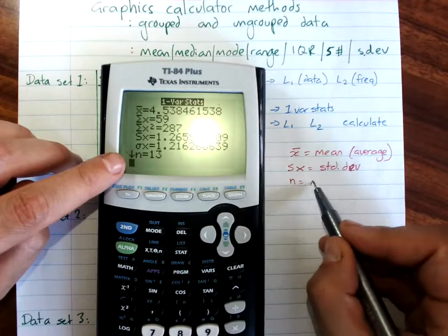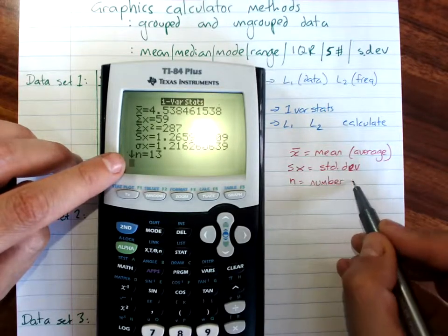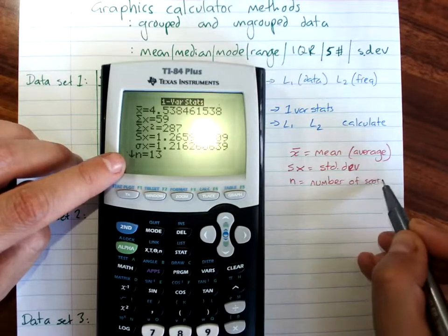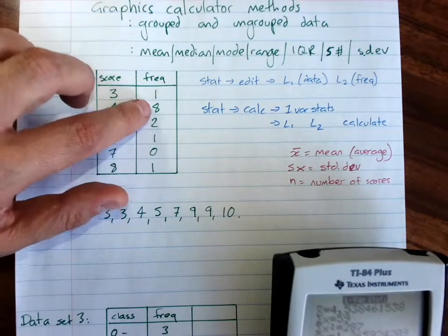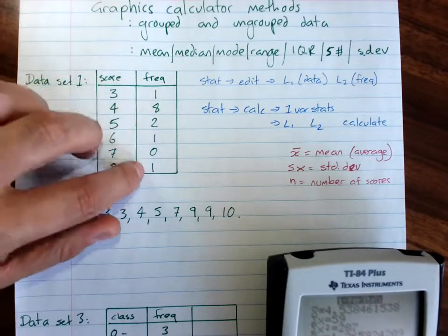And N is the number of scores. So that's pretty useful. If we added up the frequency, 9, 10, 11, 12, 13 scores.